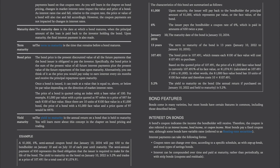Maturity date: the date at which a bond matures when the principal amount of the loan is paid back to the investor; upon maturity, the final interest payment is also made. Term to maturity: the time that remains before a bond matures. Bond price: the present discounted value of all future payments the bond issuer is obligated to pay the investor — specifically, the sum of the present value of all future interest payments plus the present value of the future repayment of principal at maturity.